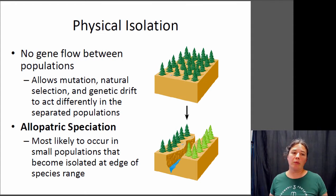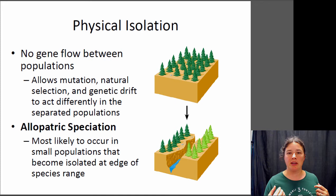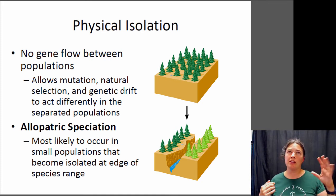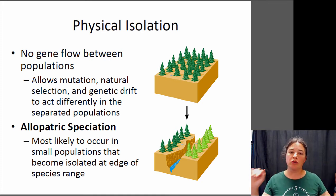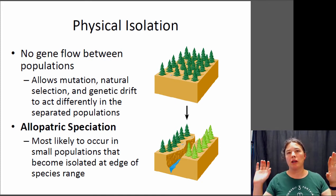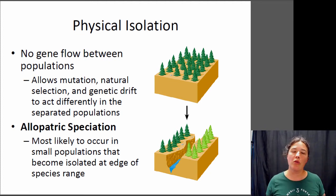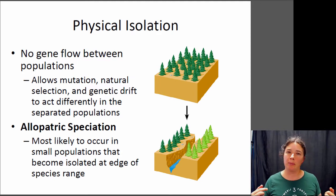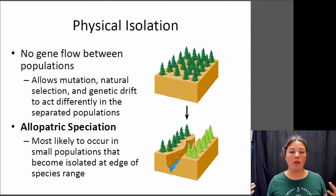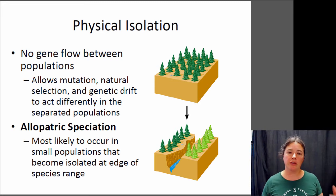This is what we would call allopatric speciation. Allopatric means different homelands, so you have two different locations with individuals in each, and there's no movement between those locations. In allopatric speciation you get an accumulation of genetic differences in the two populations.